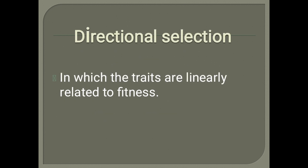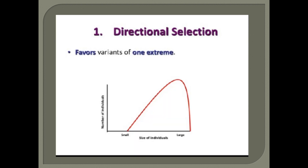Number one is directional selection, in which the traits are linearly related to fitness. مطلب جو individual زیادہ fit ہوگا، جس کی traits زیادہ اچھی ہوں گی، nature اسے select کر لے گی اور وہی survive کرے گا۔ Graph میں دیکھیں گے: جو زیادہ اچھی traits والے اور زیادہ fit ہیں، وہی survive کر رہے ہیں۔